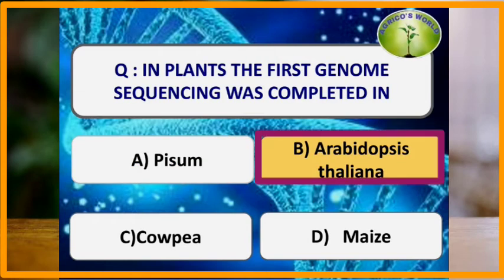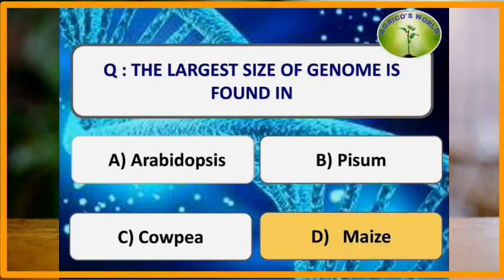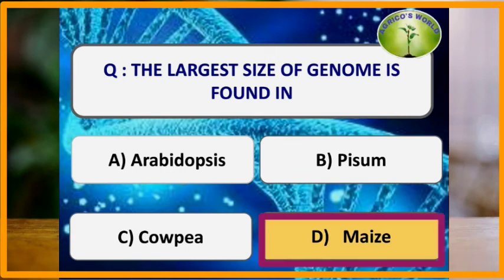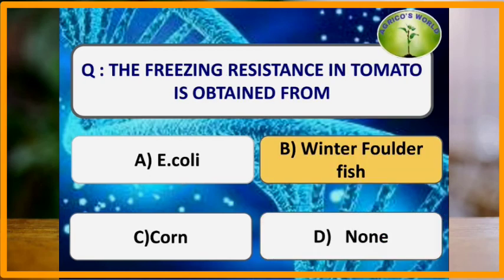In plants, the first genome sequencing was completed in Arabidopsis. The first genomic mapping overall was completed in bacteria Haemophilus influenzae. The largest genome size is found in maize, where the genome size is 2500 Mb, and the smallest genome size is found in Arabidopsis, which is 120 Mb.